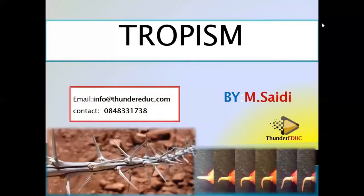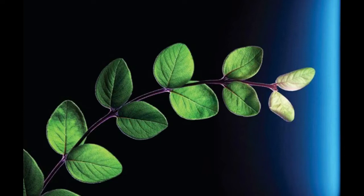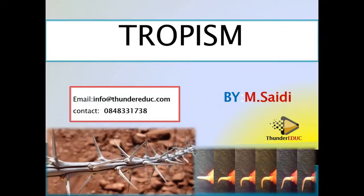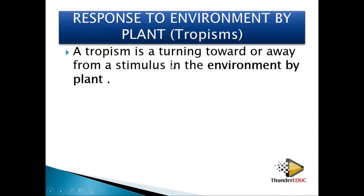Welcome back to our class. Don't forget to subscribe if it is your first time visiting our channel. Today we'll be looking at tropism, which we call a plant response to environment. Basically, tropism is a response — a plant response to environment. Scientifically, tropism is a turning towards or away from a stimulus in the environment by plants.